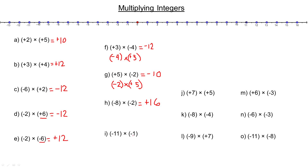Negative 11 times negative 1. If I was doing negative 11 times positive 1, I would go negative 11 one time. But I'm multiplying by negative 1, so I have to go in the opposite direction — I end up going 11 in the positive direction one time. So that multiplies to positive 11.